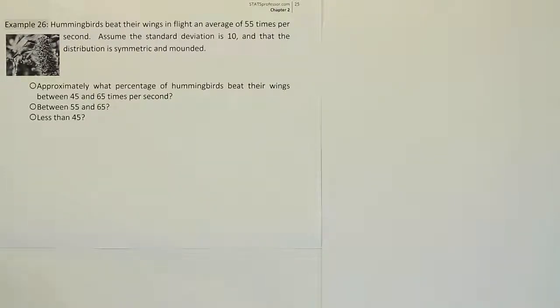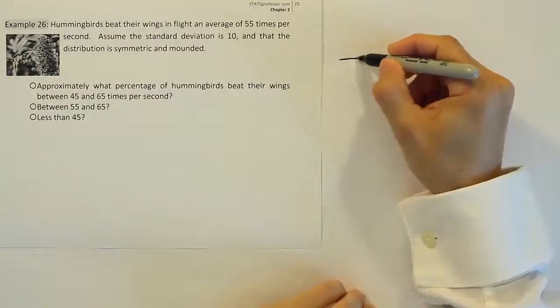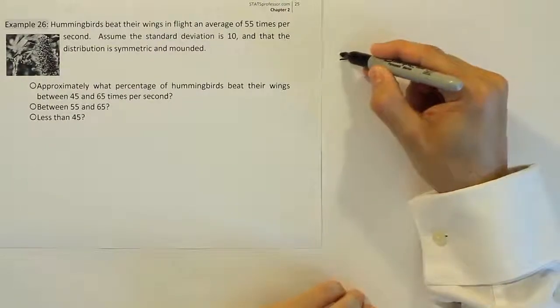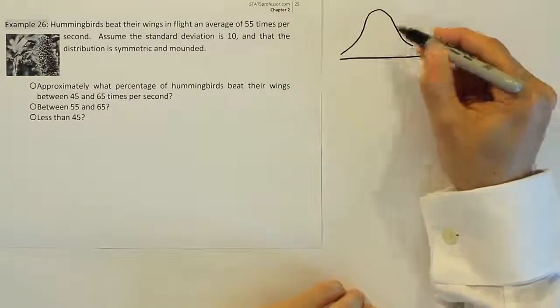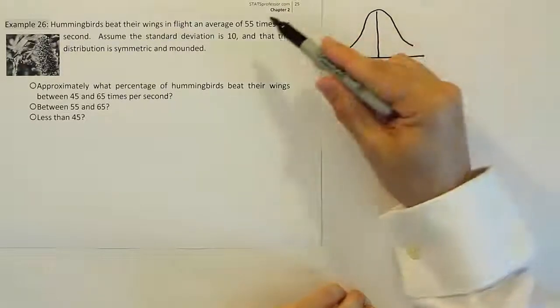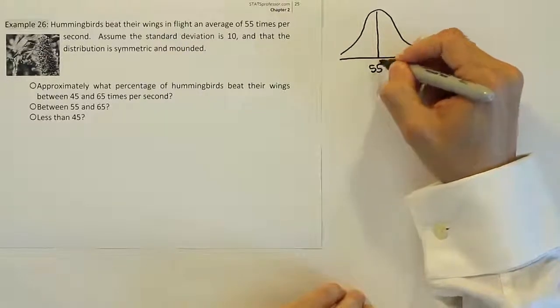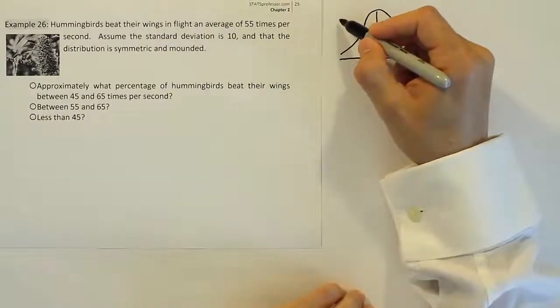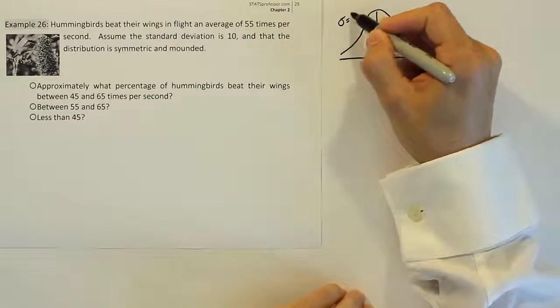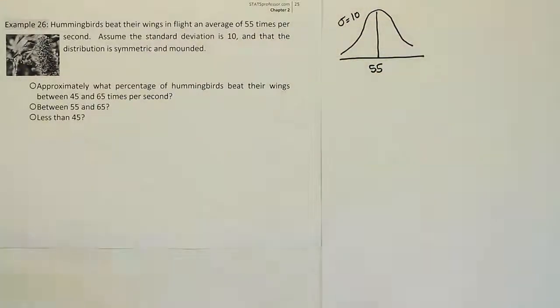I'm going to draw the bell curve. The bell curve for the first one will be centered at the mean. The mean here is 55, so we'll put 55 here in the middle. Then up top here we'll label the standard deviation. That was told to be 10 in the problem. So we have the mean and the standard deviation. Our next step is going to be to label the interval on our drawing by subtracting and adding standard deviations until we arrive at the numbers they gave us in the interval.